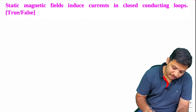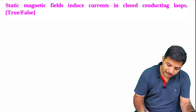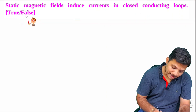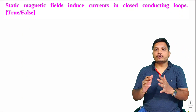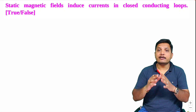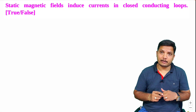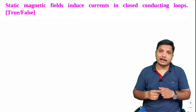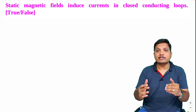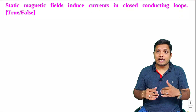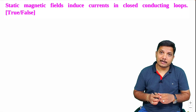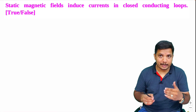Let us have the second question. In the second question: 'Static magnetic fields induce current in closed conducting loops' — whether it is true or false. One should know that a static magnetic field cannot produce induced current. To have induced current, there has to be a dynamic magnetic field. That is what Faraday's experiment states — it explains that rate of change of flux with respect to time generates induced EMF, which will produce induced current.